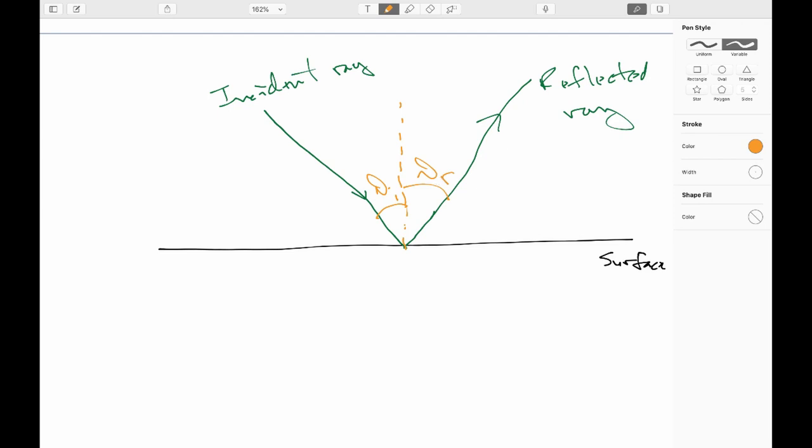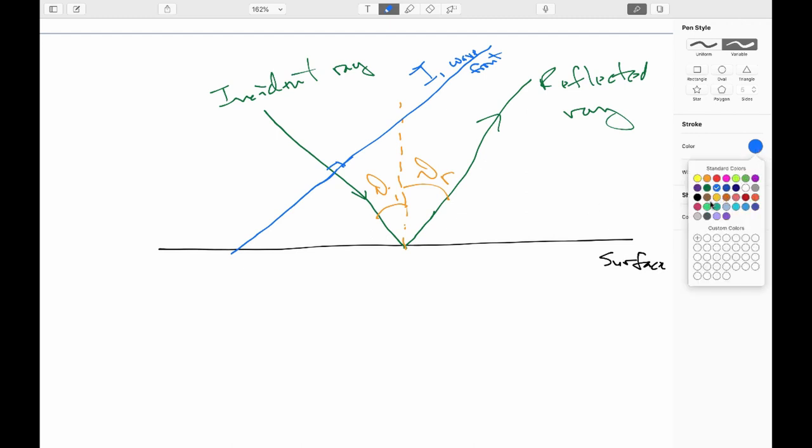So, now, the game that we're going to play here is we are going to look at a particular wavefront coming that is associated with this incident ray. So, remember, the wavefront is necessarily going to have to be perpendicular to the ray. So, we will say that this is the incident wavefront.